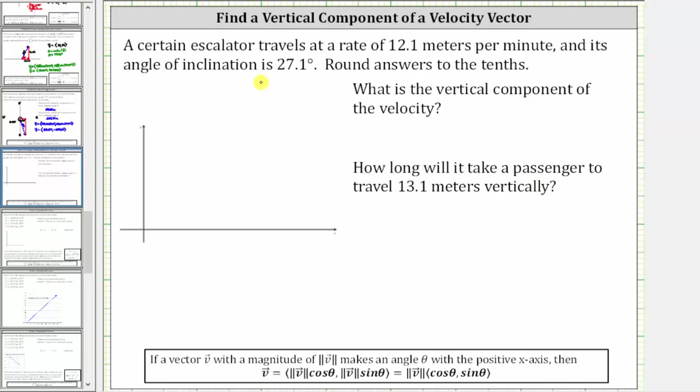Let's represent the given information using a vector, where because the angle of inclination is 27.1 degrees, the angle between the positive x-axis and the vector is 27.1 degrees. Let's say the vector is this vector here, which means this angle here is 27.1 degrees.